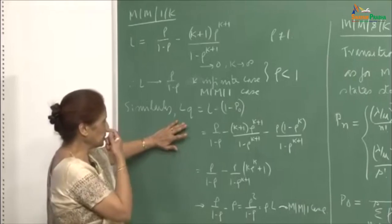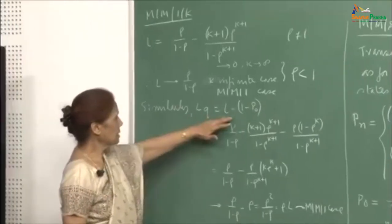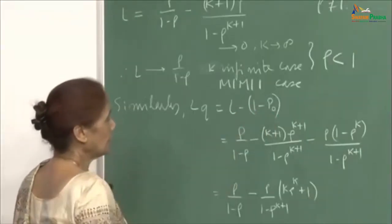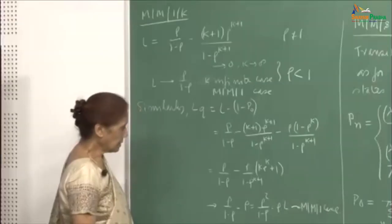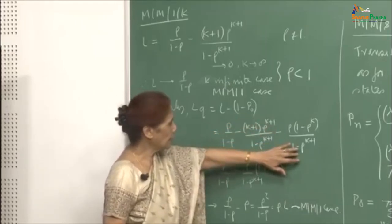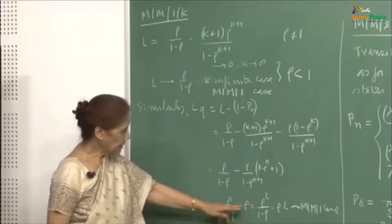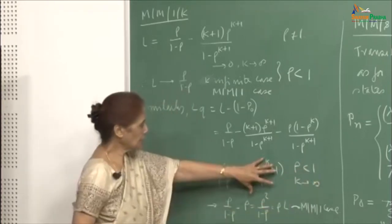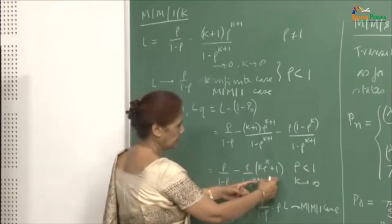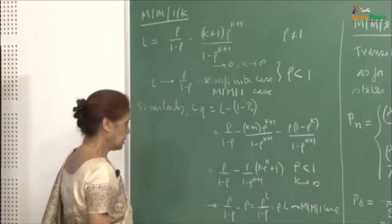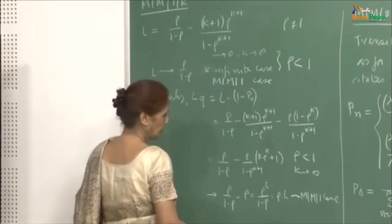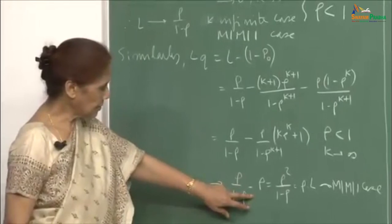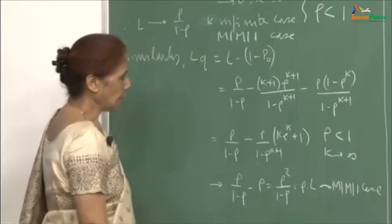Similarly, the derivation for Lq — Lq is L minus (1 minus p_naught). You can see from the formula for Lq it will be a summation of (n minus 1) into p_n. So you get this expression. I write the expression for L and this is for (1 minus p_naught), and therefore you can simplify this. Finally, as k goes to infinity for rho less than 1, this portion will become 1. So you will be left with rho, and this will be rho upon (1 minus rho) minus rho, which equals rho squared over (1 minus rho). Again the same as the MM1 case.